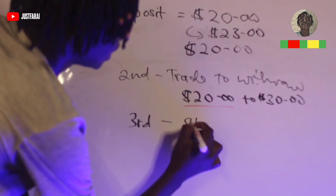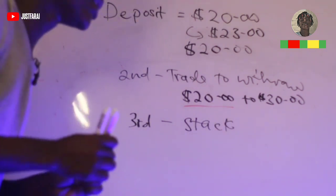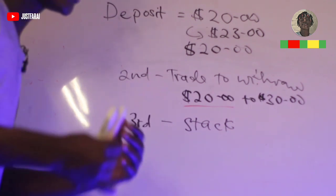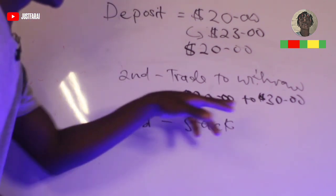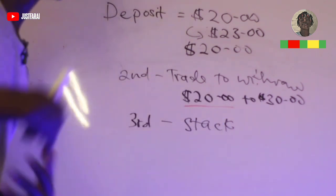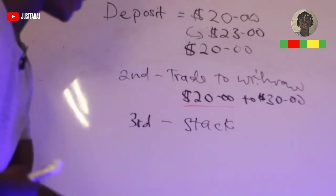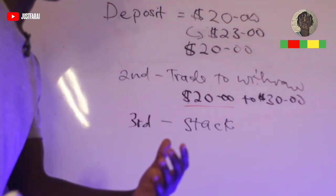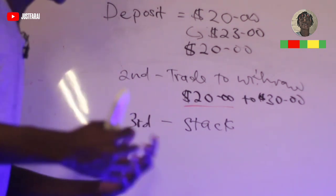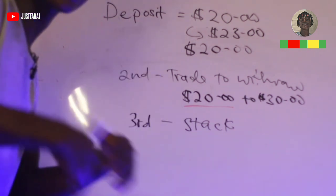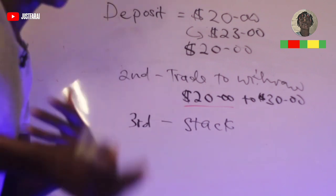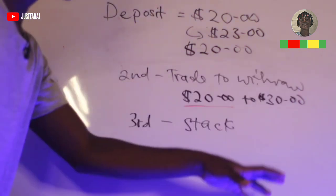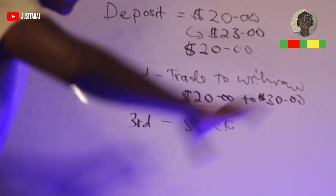The third thing you need to do is stack. Those $10 profits you keep withdrawing — you stack them aside as a cushion. That way, if the market goes against you and you lose your $20, you can re-fund your account from your stacked profits. This model gives you money set aside if anything goes wrong.